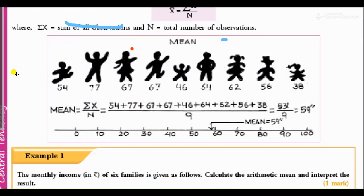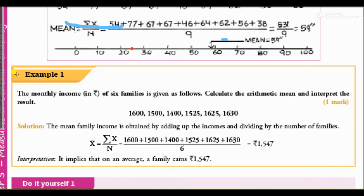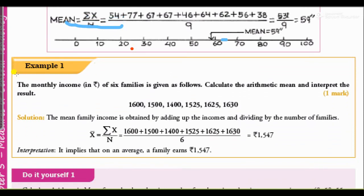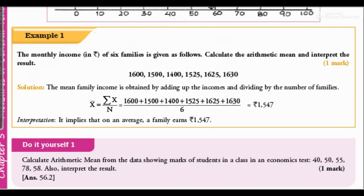Short and sweet — we will see a one-mark numerical. We are given the monthly income in rupees of 6 families. The incomes are 1,600; 1,500; 1,400, and so on. We have to find the arithmetic mean and interpret the result.